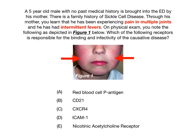Going back to the question, the key buzzwords are: pain in multiple joints (polyarthropathy), intermittent fevers, and the red cheeks shown in figure one. Whether it's the red cheeks, the intermittent fevers, the polyarthropathy, or even the family history of sickle cell disease, you should start thinking about parvovirus B19 — the pathogen that causes erythema infectiosum, which produces that classic slapped cheek appearance.